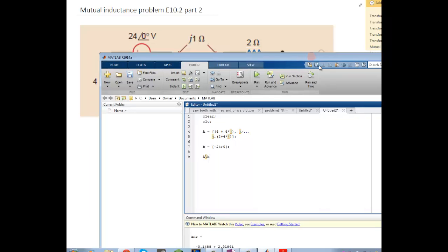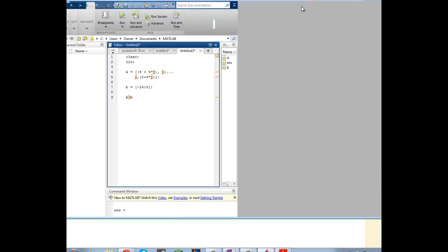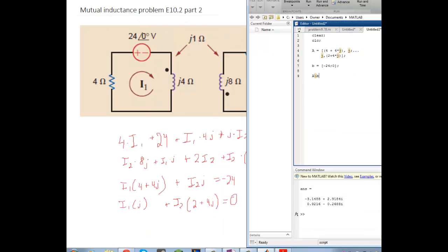I already plugged them in MATLAB. We have our 2 by 2 matrix right here and our 1 by 2 right here. A backslash B solves the matrix. And here we see that our I1 equals negative 3.1488.